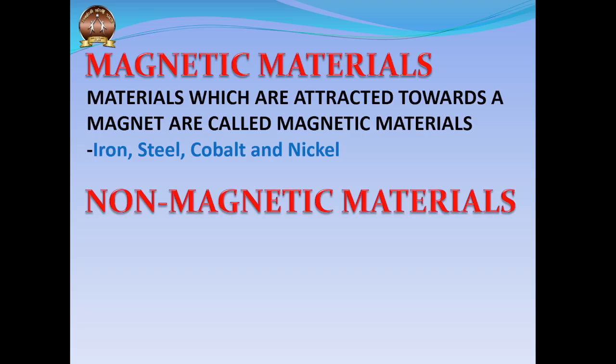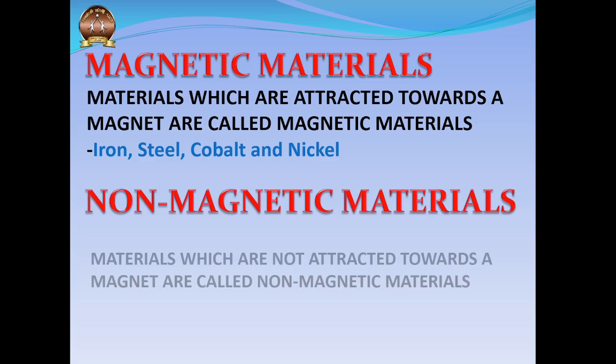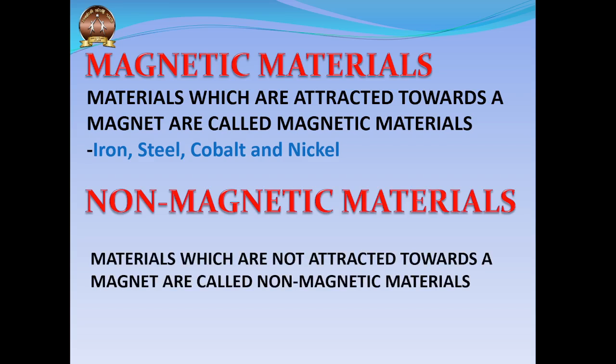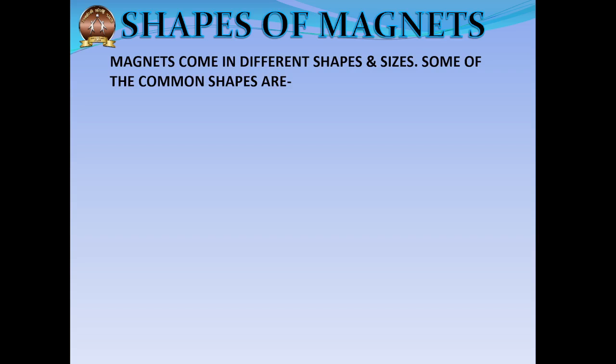Magnetic materials are those materials which are attracted towards a magnet. They are usually made up of iron, steel, cobalt, and nickel. Non-magnetic materials are those materials which are not attracted towards magnets. If you've played with magnets, you must have come across magnets of different shapes.